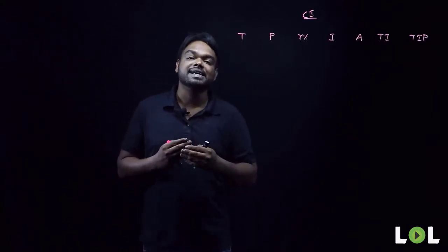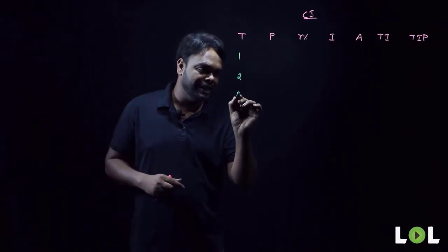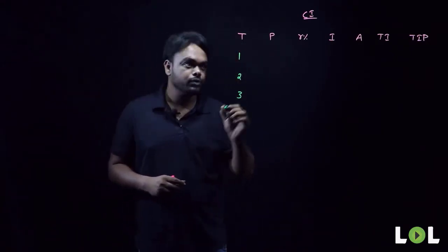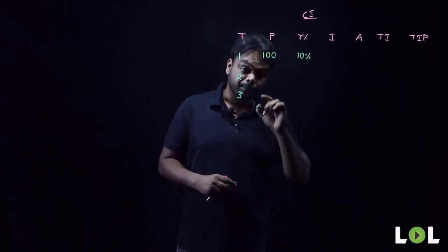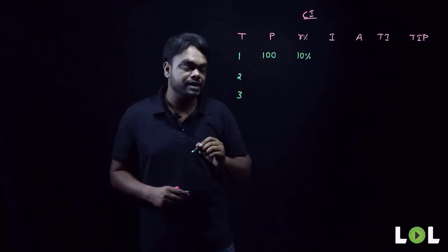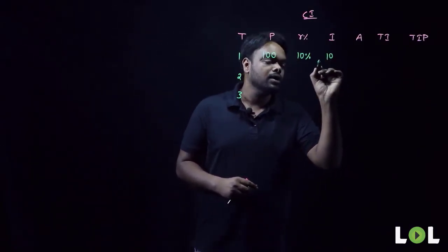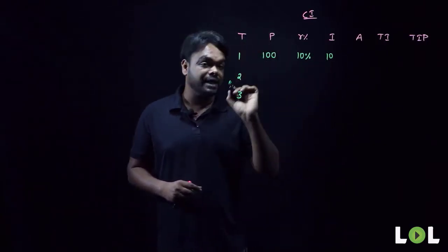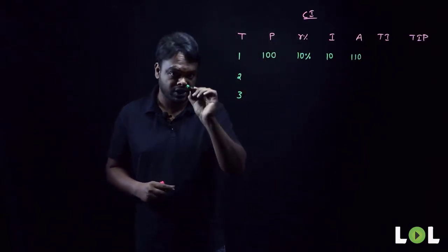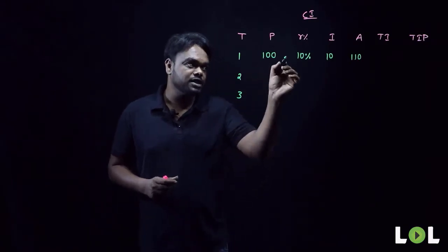Just like in simple interest, here also we shall consider a scenario of three years — a business transaction between you and me. So time is one, two, and three years. Let us assume I borrow 100 rupees from you at a rate of interest of 10 percent per annum. First year, 10 percent of 100 rupees is 10 rupees interest, so altogether I have to pay you 110 rupees at the end of the first year.